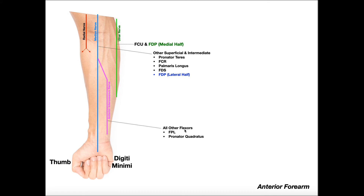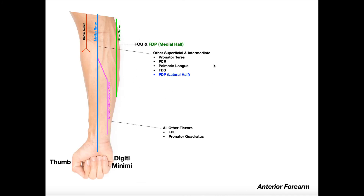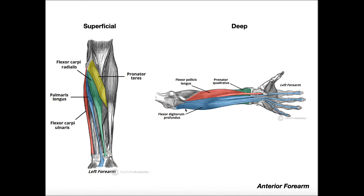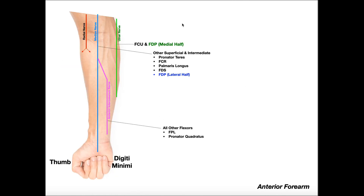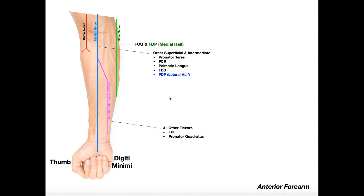Every other remaining muscle is innervated by the anterior interosseous nerve — specifically FPL (flexor pollicis longus) and the deepest muscle, pronator quadratus. To reason through the whole picture: FCU is fully ulnar; pronator teres, flexor carpi radialis, palmaris longus, and flexor digitorum superficialis are all median; FDP has split innervation between median (lateral half) and ulnar (medial half); and FPL and pronator quadratus are both anterior interosseous nerve.